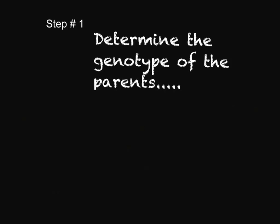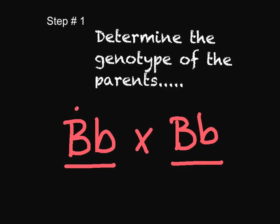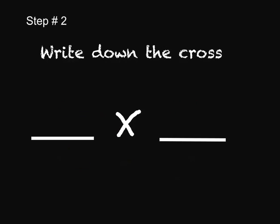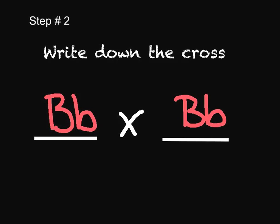The first thing you need to do is determine the genotypes of the parent. So what we are going to do is cross a hybrid with a hybrid. These are the two sets of letters — two alleles, one from each parent. Next, you write down the cross: a hybrid parent crossed with another hybrid parent for that trait.